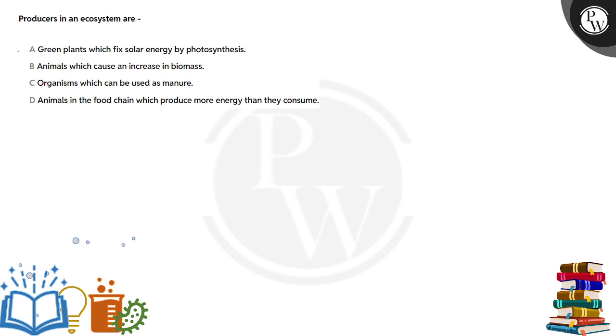Hi, Pacho here. The question is producers in an ecosystem are which of the following? You have to choose. Green plants which fix solar energy by photosynthesis, this seems correct. Animals which cause increase in biomass, wrong.